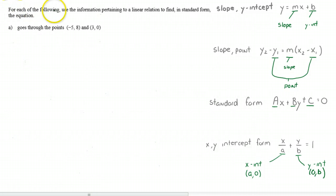So for each of the following, we only have one question here, but in other videos we'll do the other ones. Use the information pertaining to a linear relation to find, in standard form, the equation. So this question specifically asks for standard form, which you can see right here. However, I'm going to give all four forms of this line. So the first thing I do is I look at what information is given here. And I see that I'm given a point, and I see that I'm given another point. And specifically what's nice about this point is that this point is the x-intercept.